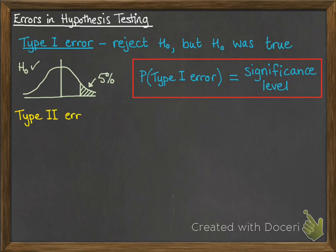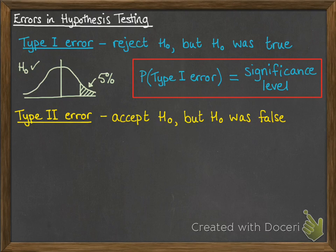Okay, now the other type is a Type 2 error, and that's the other way around. So this is when you accept the null hypothesis, but actually it was false.